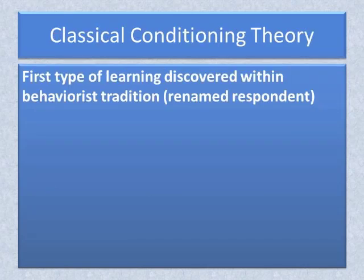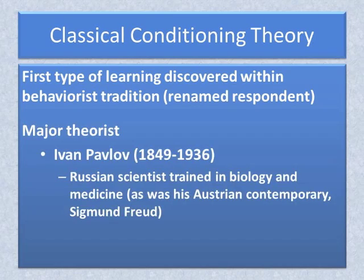Classical conditioning is so termed because it was the first type of learning discovered within the behaviorist tradition. It was later renamed as respondent conditioning for reasons that will become obvious when it is explained. The major theorist for classical conditioning was Ivan Pavlov, who lived between 1849 and 1936. He was a Russian scientist trained in biology and medicine, as was his Austrian contemporary Sigmund Freud, who developed the psychodynamic approach to the study of personality.